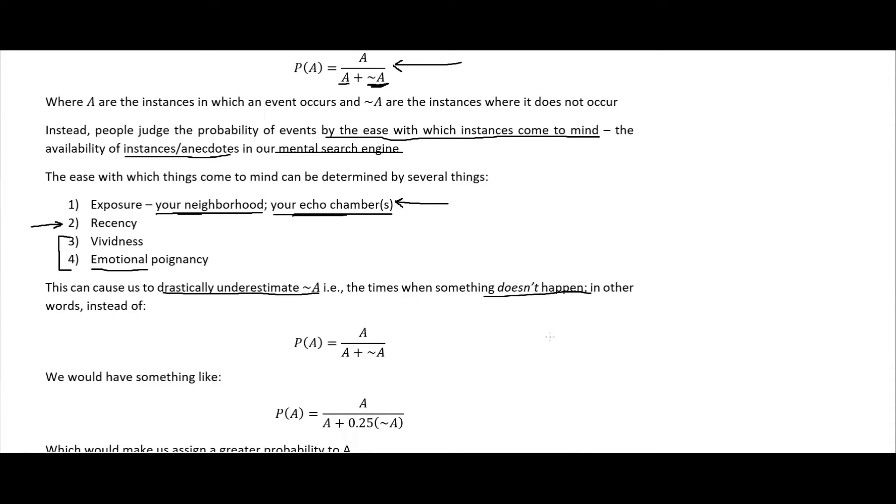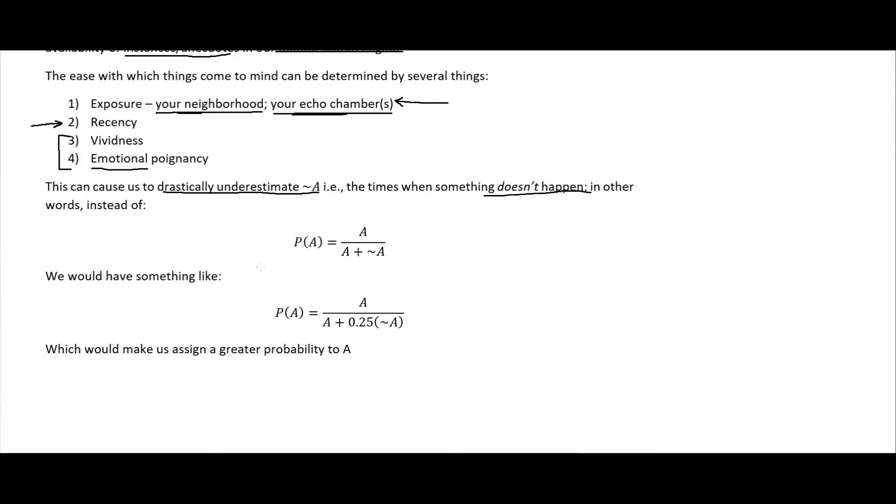This can cause us to drastically underestimate the times when something doesn't happen. It's always difficult to count the number of times something doesn't happen compared to when something does happen. We're downplaying our not-A, multiplying it by 0.25 or something smaller to reduce it, which makes us assign greater probability to A because our denominator is becoming smaller.